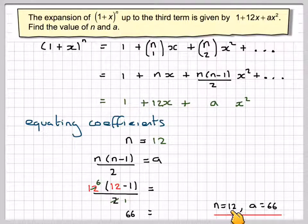Therefore, n must be 12 and a must be equal to 66.